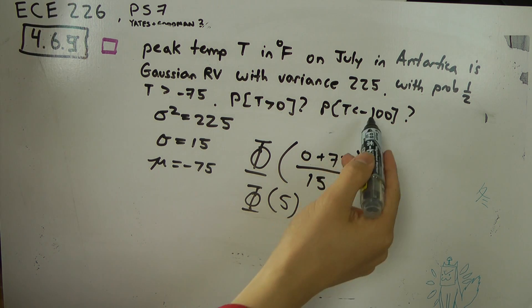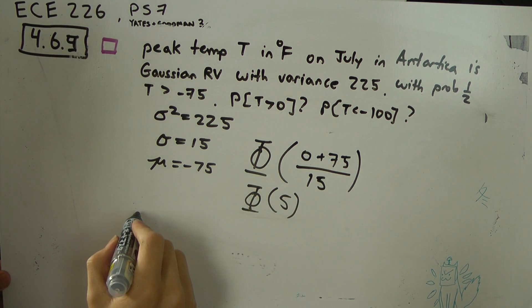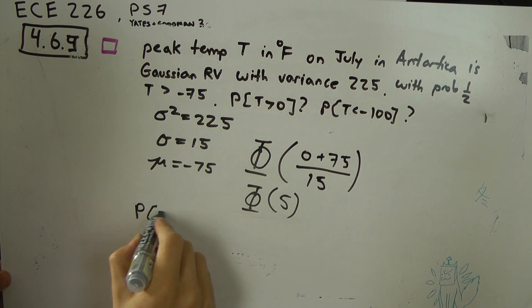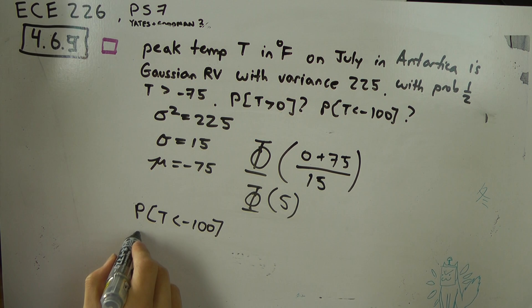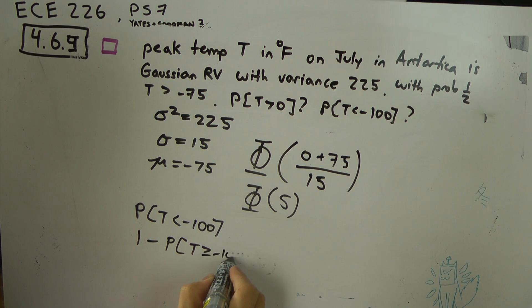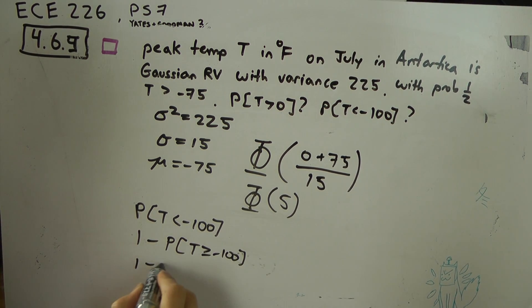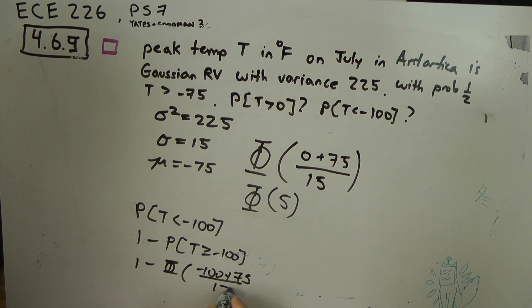And then, how about the second part? The probability that temperature is less than minus 100. We can just use inverse probability complements. So 1 minus phi of minus 100 plus 75 over 15.